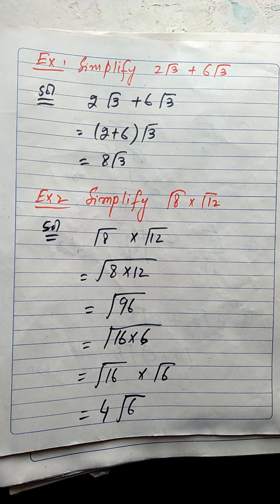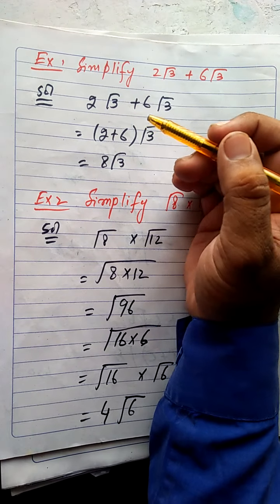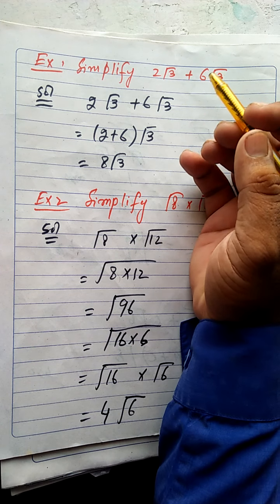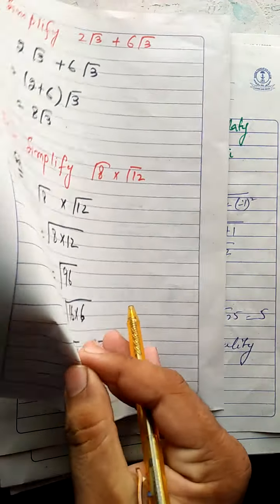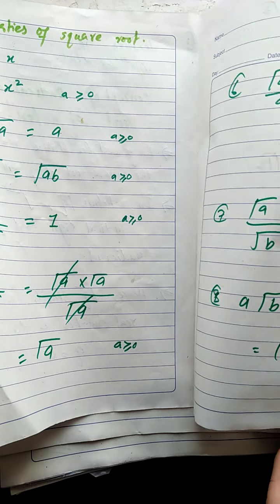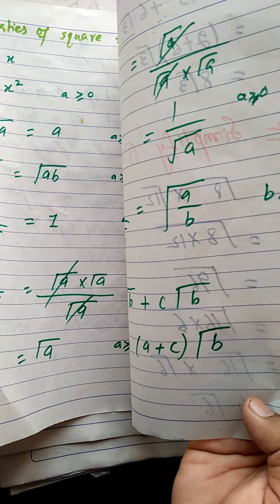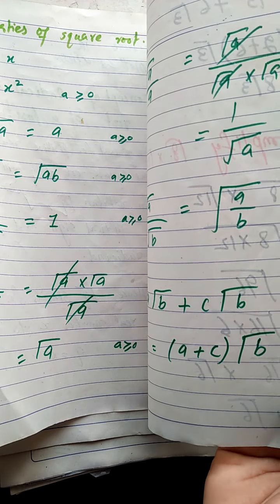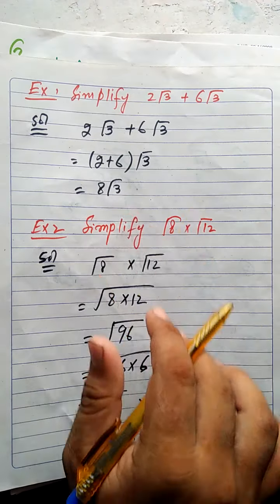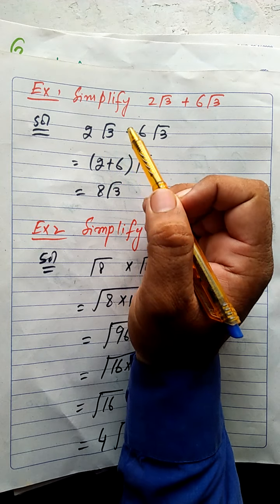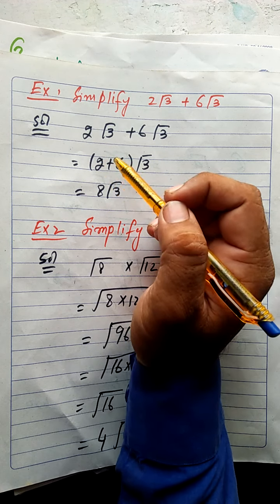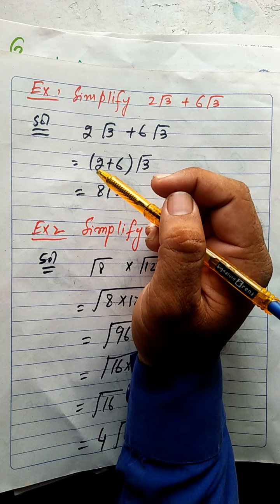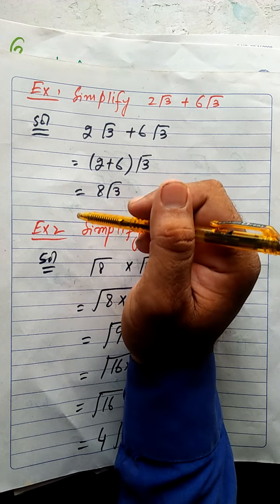Now there are some examples. Example one: simplify 2√3 + 6√3. Applying property number eight, we add the coefficients: 2 + 6 = 8, and under root three remains. So the answer is 8√3.